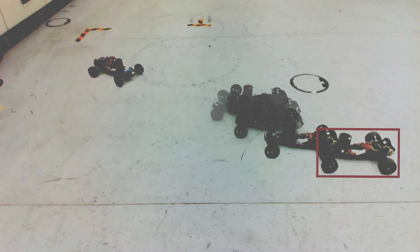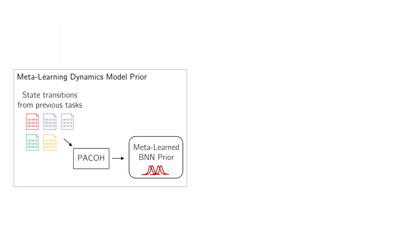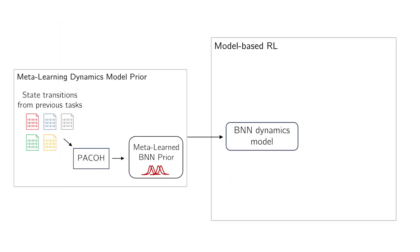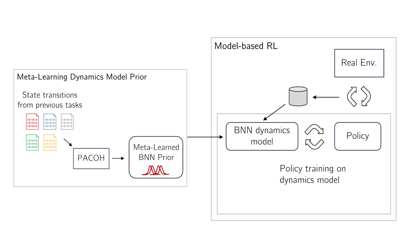We use an unseen meta task for the RL evaluation. The collected metadata is used to learn a prior over the car's dynamics model using PACO. The prior is then used on the dynamics model of a new unseen RL task. In the RL loop, the dynamics model is used to determine a policy through standard policy optimization solvers such as SAC. The obtained policy is then executed on the true system to gather data, and the resulting data is used to update the estimated dynamics model. This process is repeated for multiple episodes.